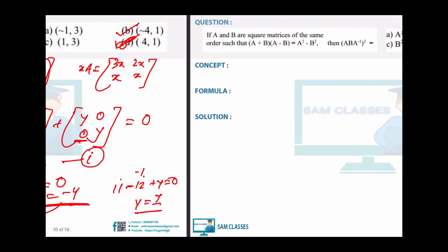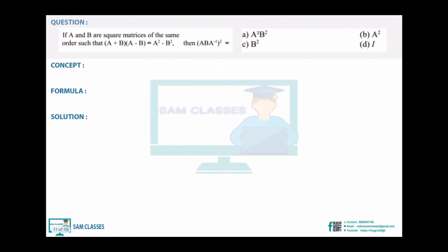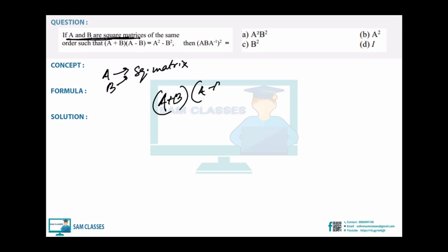Next question: analyze it first — break it into small parts. A and B are both square matrices of the same order such that (A + B)(A - B) = A² - B². Let's solve this by plain multiplication.